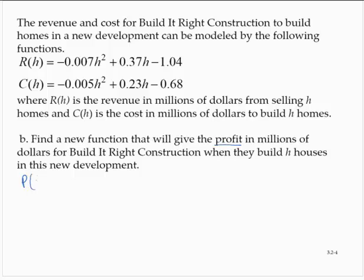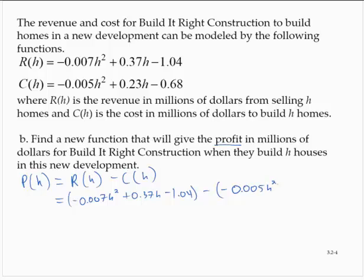Profit - so let's say that the profit for building H homes. Well, profit is equal to revenue minus cost. So revenue is negative 0.007 H squared plus 0.37 H minus 1.04. Subtract the cost: negative 0.005 H squared plus 0.23 H minus 0.68.